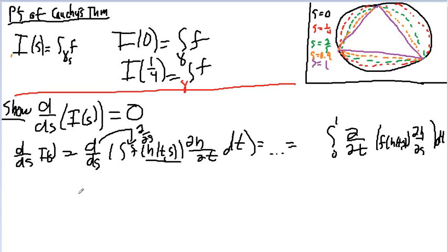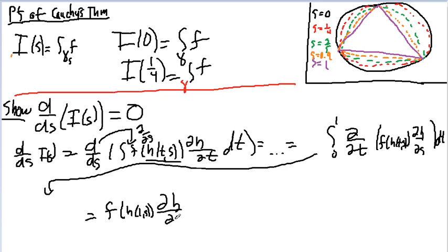So this is going to be equal to F as I evaluate at 1 times dH/dS evaluated at 1 minus F evaluated at 0 because the limits of integration are 0 to 1 because S equals 0 is the circle, S equals 1 is the triangle.